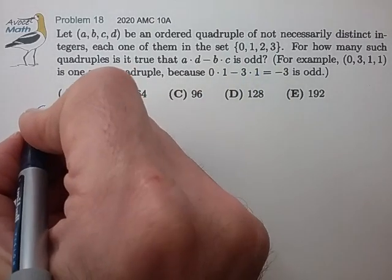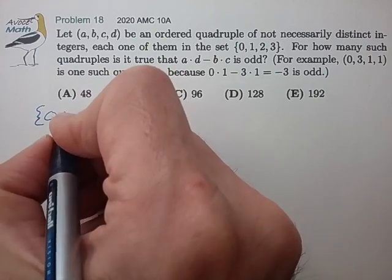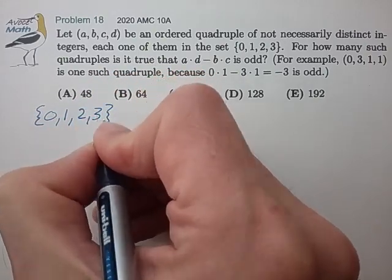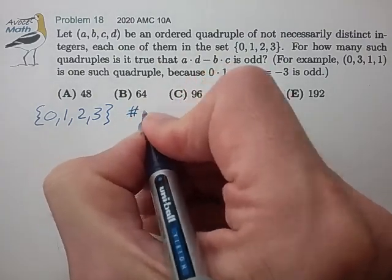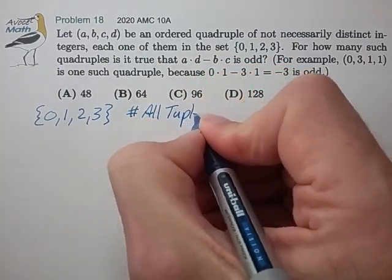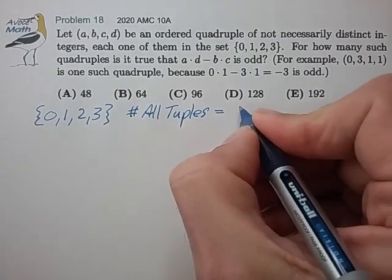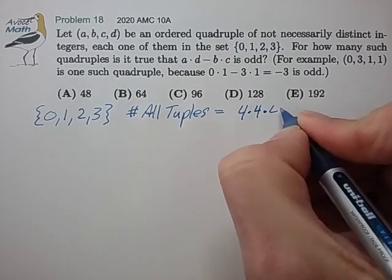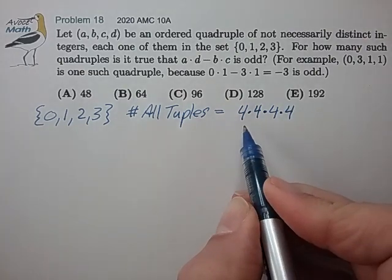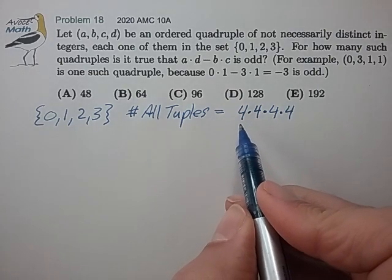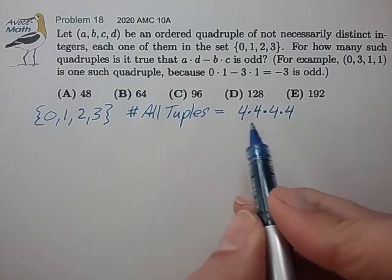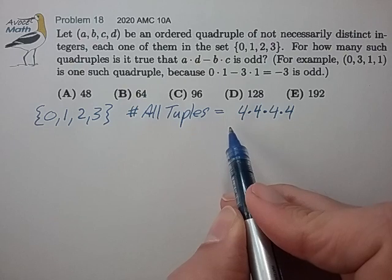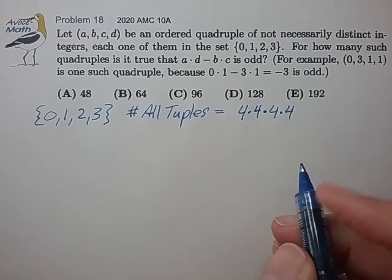So we're selecting numbers in the set of 0, 1, 2, 3. The number of all possible tuples is the number of choices available for A times the number of choices available for B, and so on. To calculate the number of odd tuples, we could calculate the probability of an odd tuple and just multiply by all possible tuples. So let's try that approach.